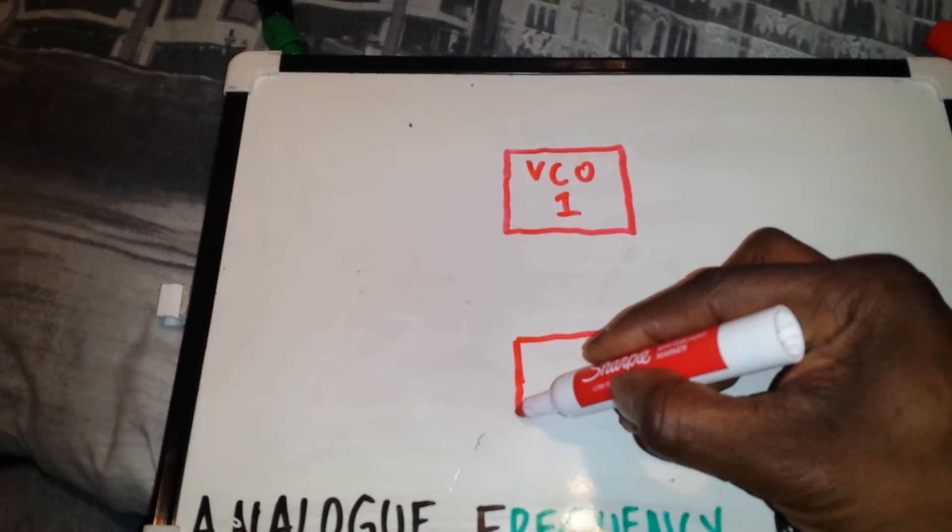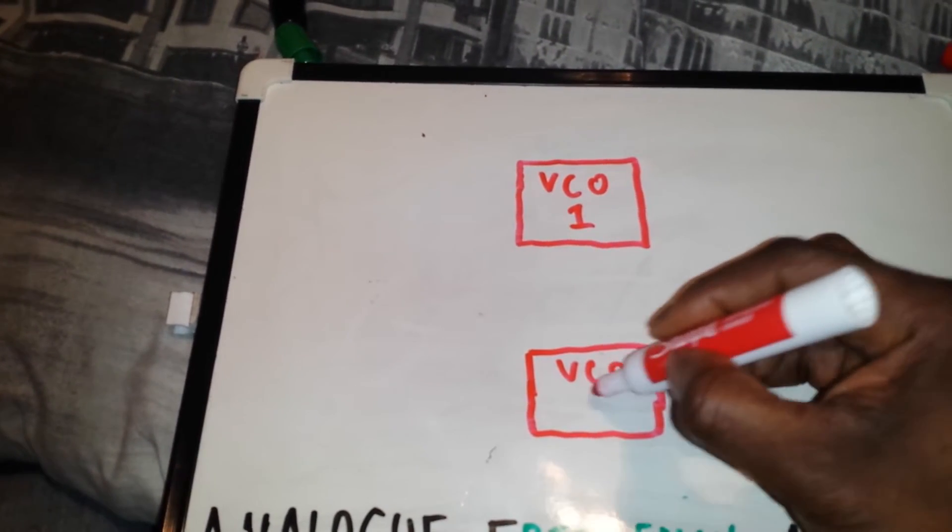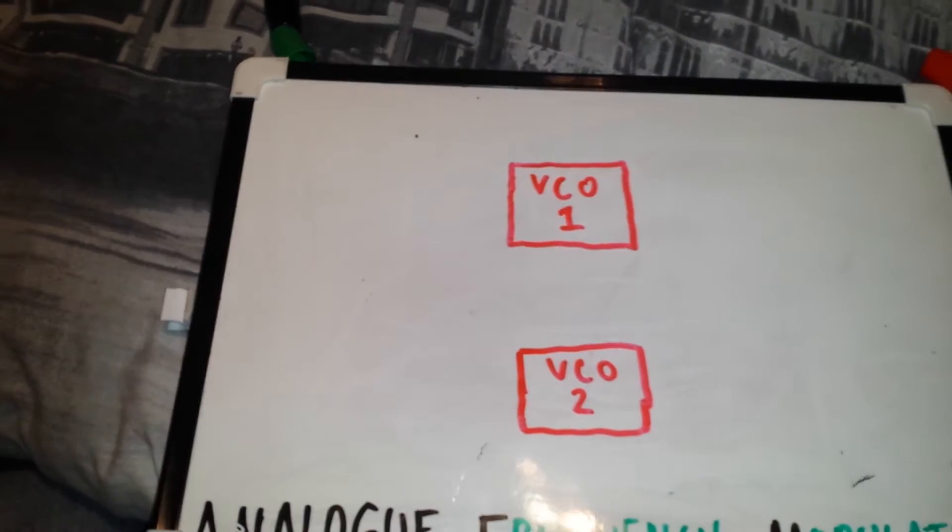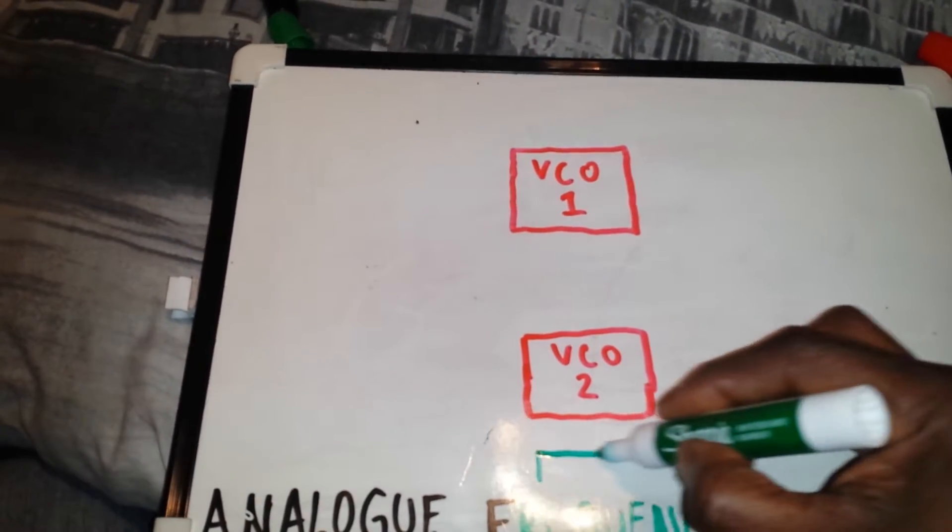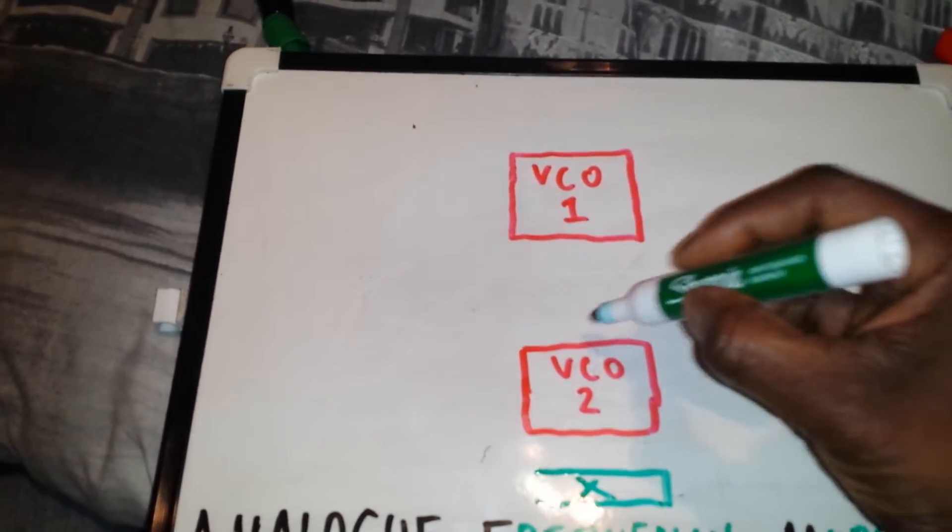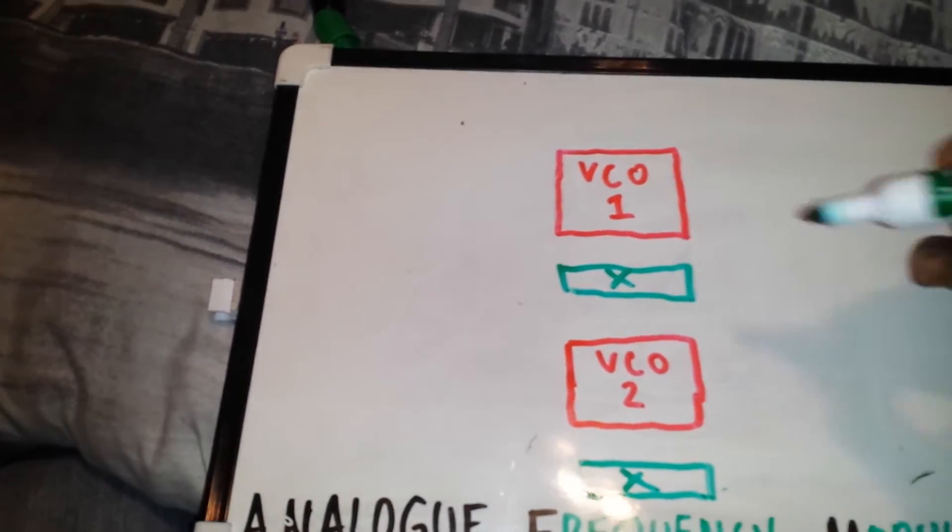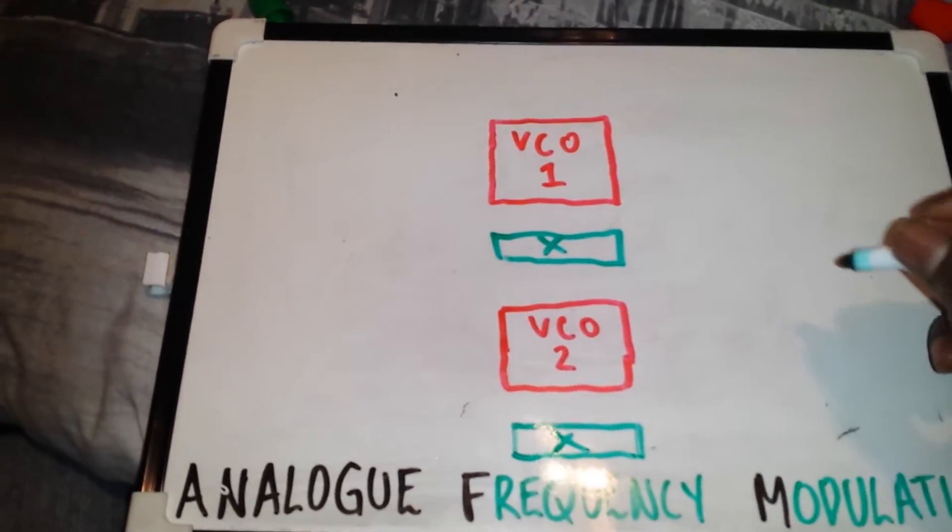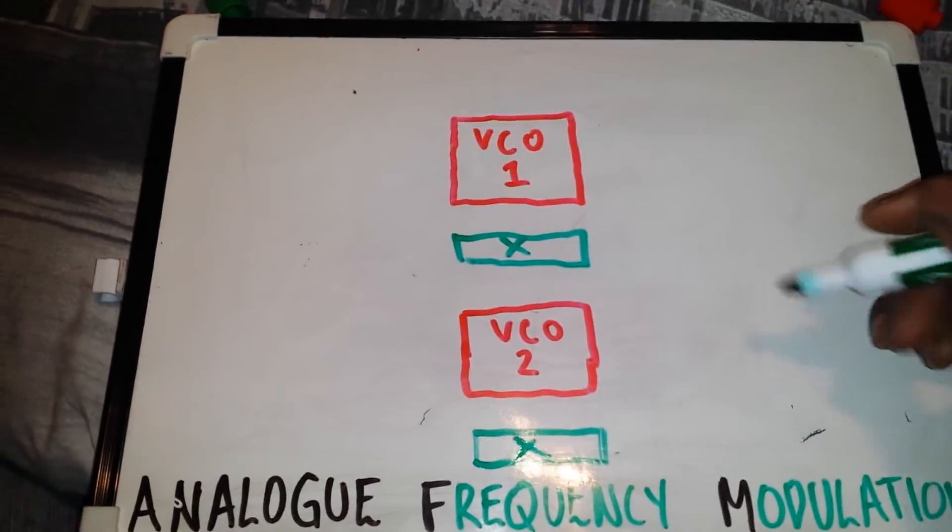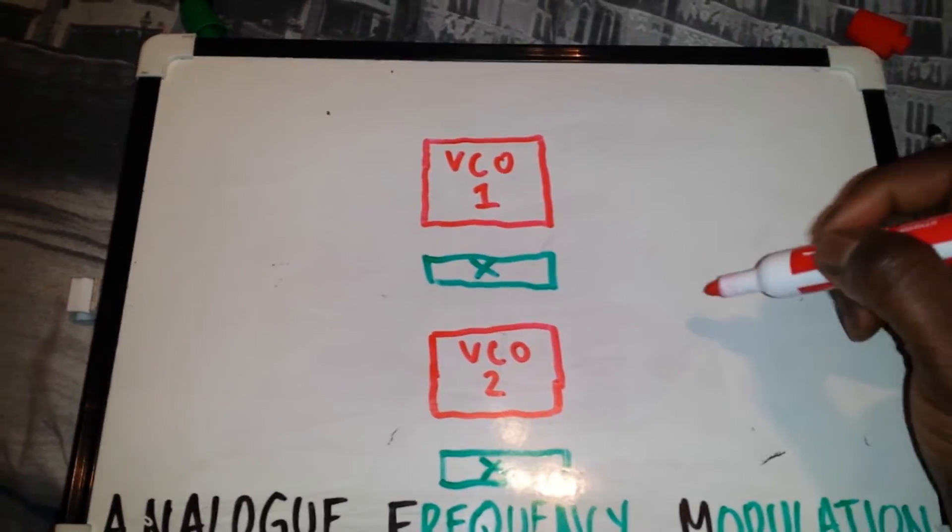And then just quickly explain the way it's put together. If we call these X blocks the exponential converters, which are the frequency control converters which take a linear control voltage in and express it as an exponential musical frequency pitch.